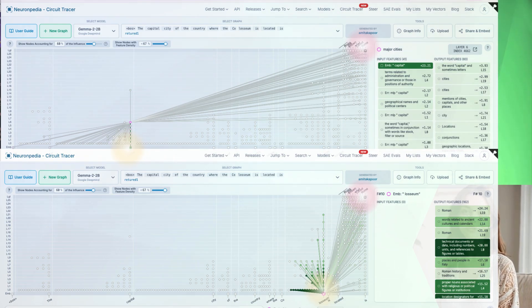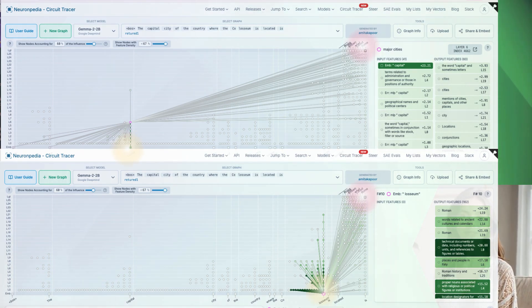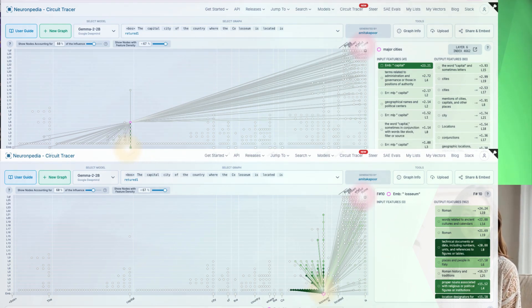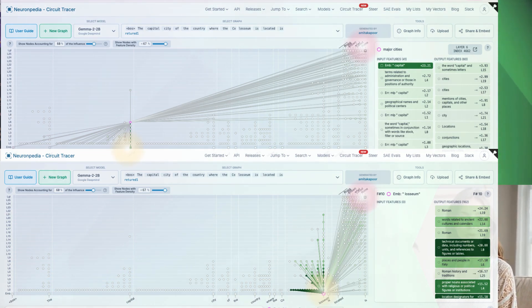Finally, the attribution graph shows how these two streams of thought combine. The features for Italy and the features for capital city both point towards features that want to say the word Rome. The intersection of these two concepts leads to the correct answer. It's genuine multi-step reasoning happening right inside the model's forward pass.